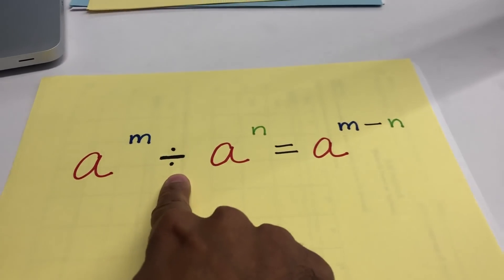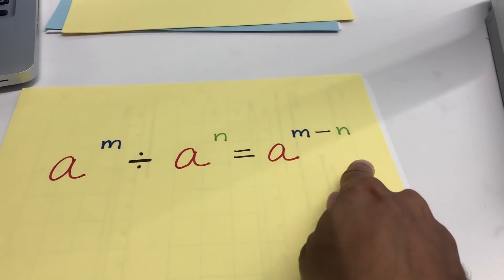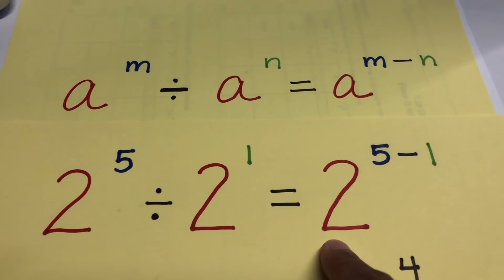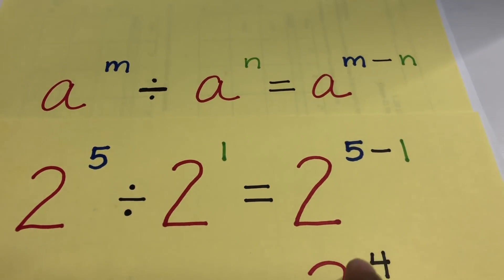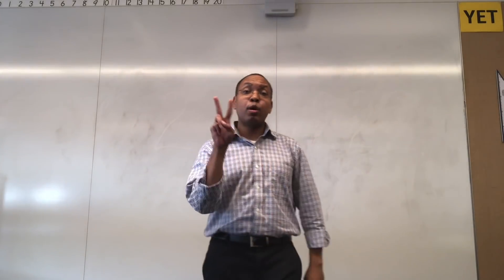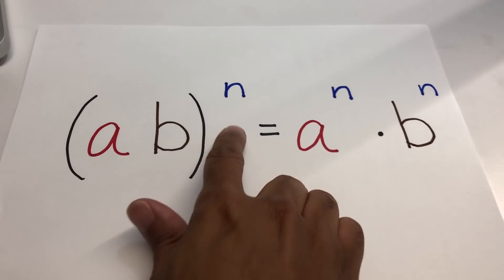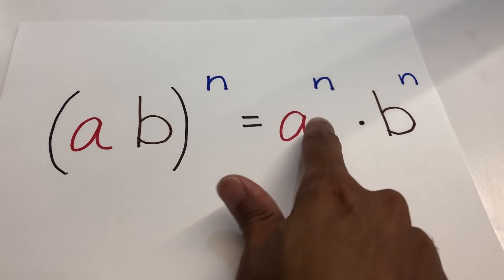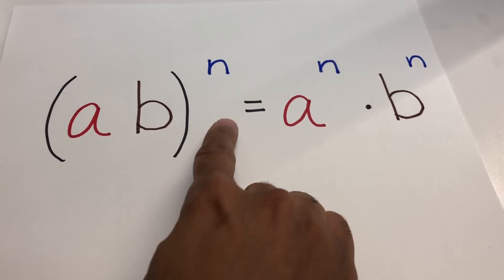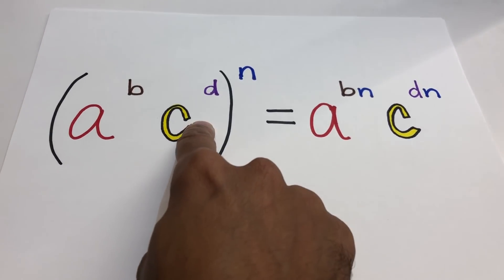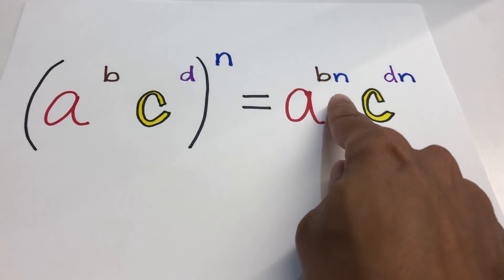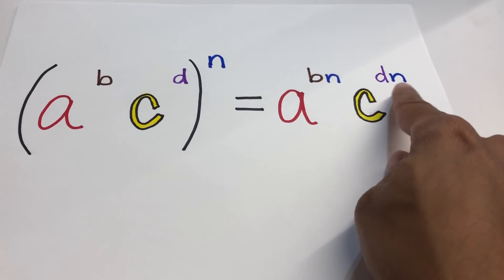A to the nth divided by A to the mth equals A to the n minus m power. For example, two to the fifth divided by two to the first equals two to the five minus one, which equals two to the fourth, which equals 16. A couple more laws: A times B raised to the nth equals A to the nth times B to the nth, so each factor gets raised to the nth power. A to the B times C to the D, raised to the nth power, equals A to the B times n, times C to the D times n.